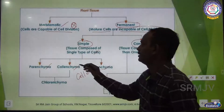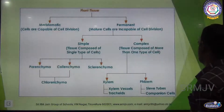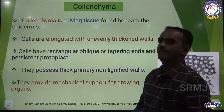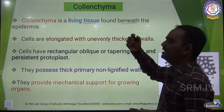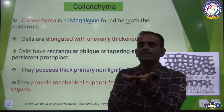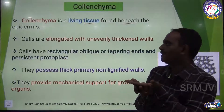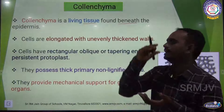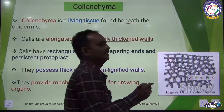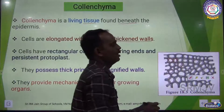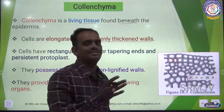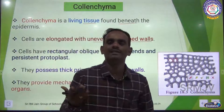Collenchyma is a living tissue found beneath the epidermis — the outermost layer. The cells are elongated with unevenly thickened cell walls. Some cells have very thick cell walls and some have very thin cell walls; they are not evenly arranged.